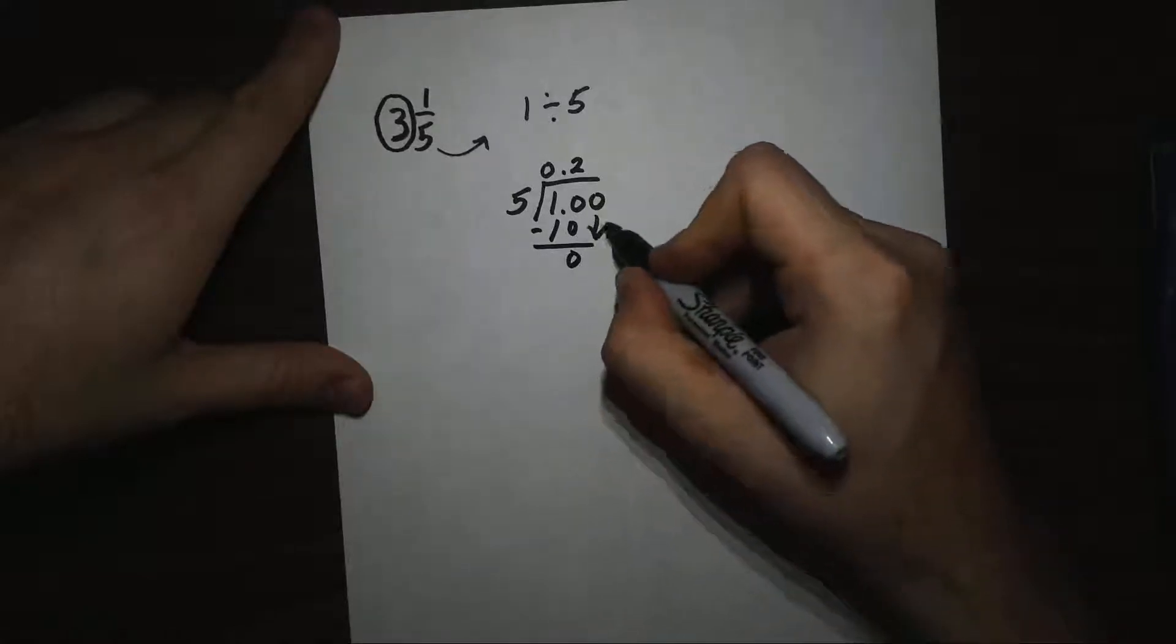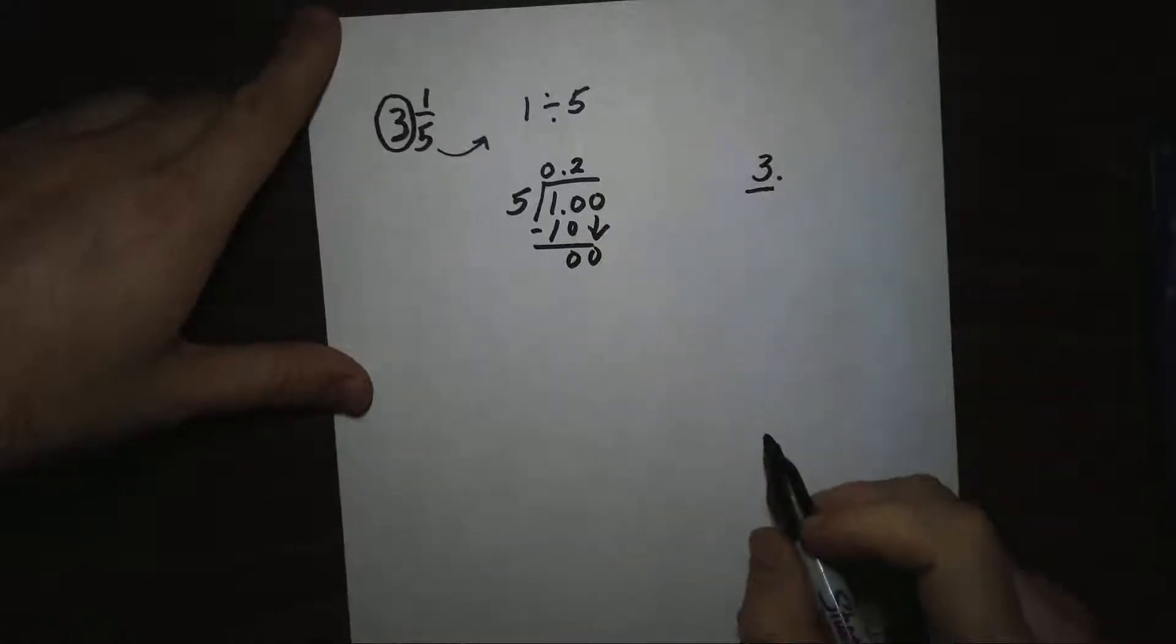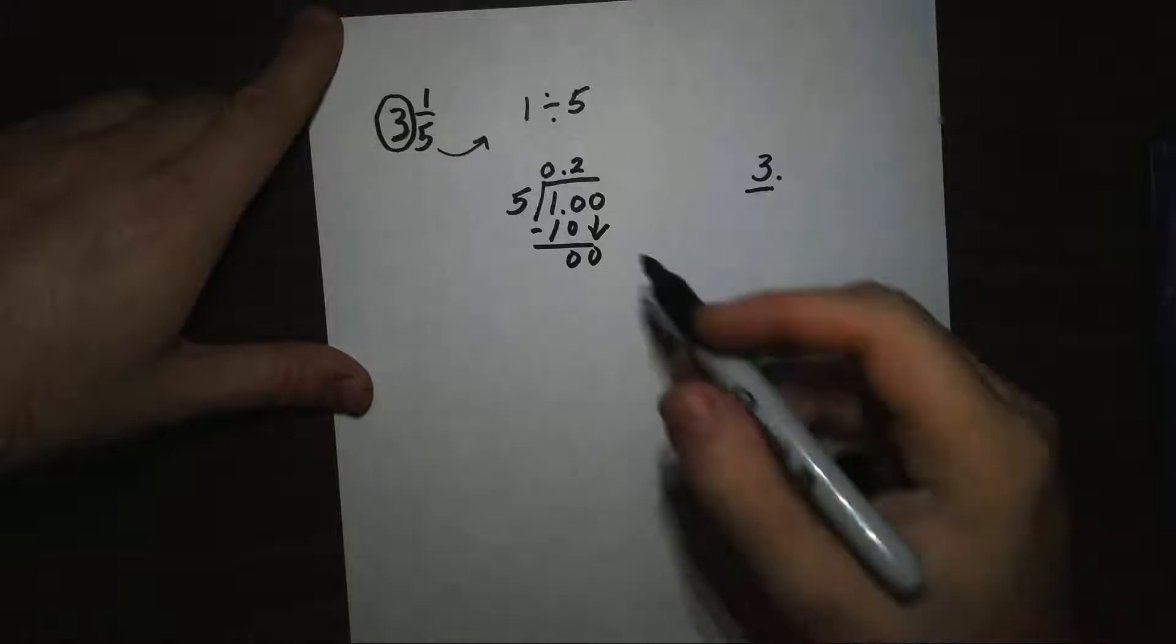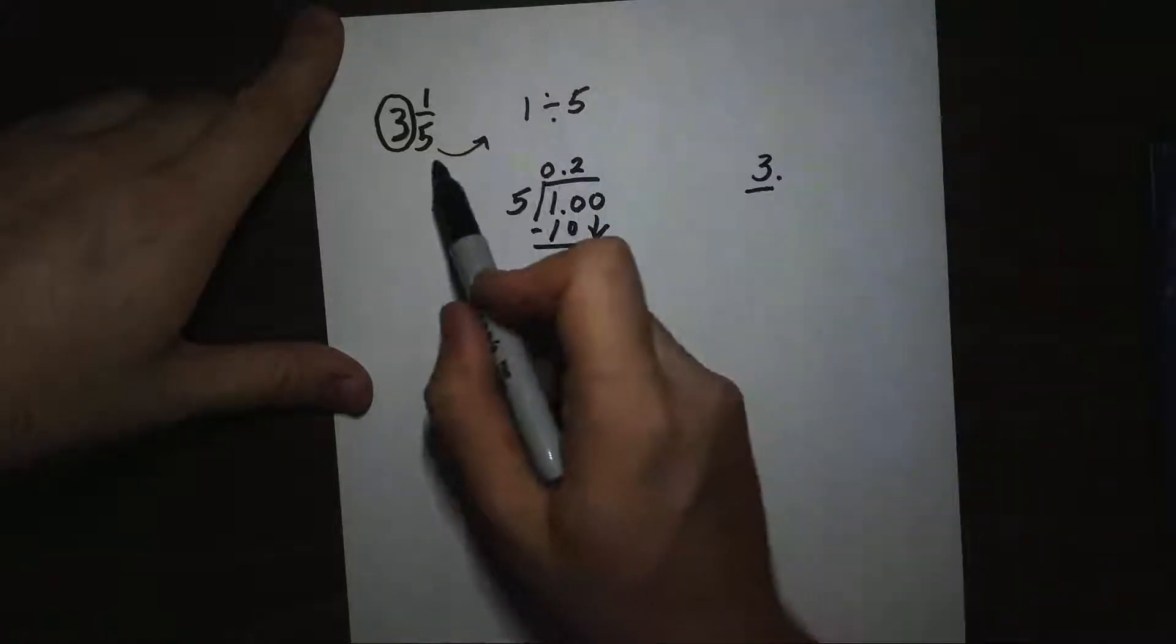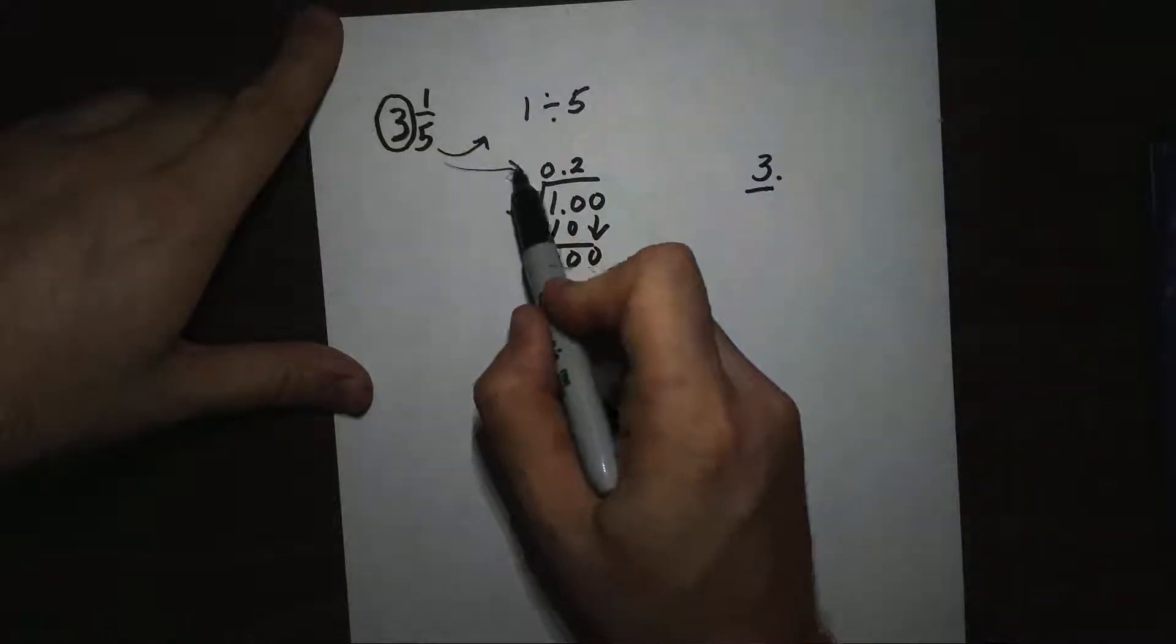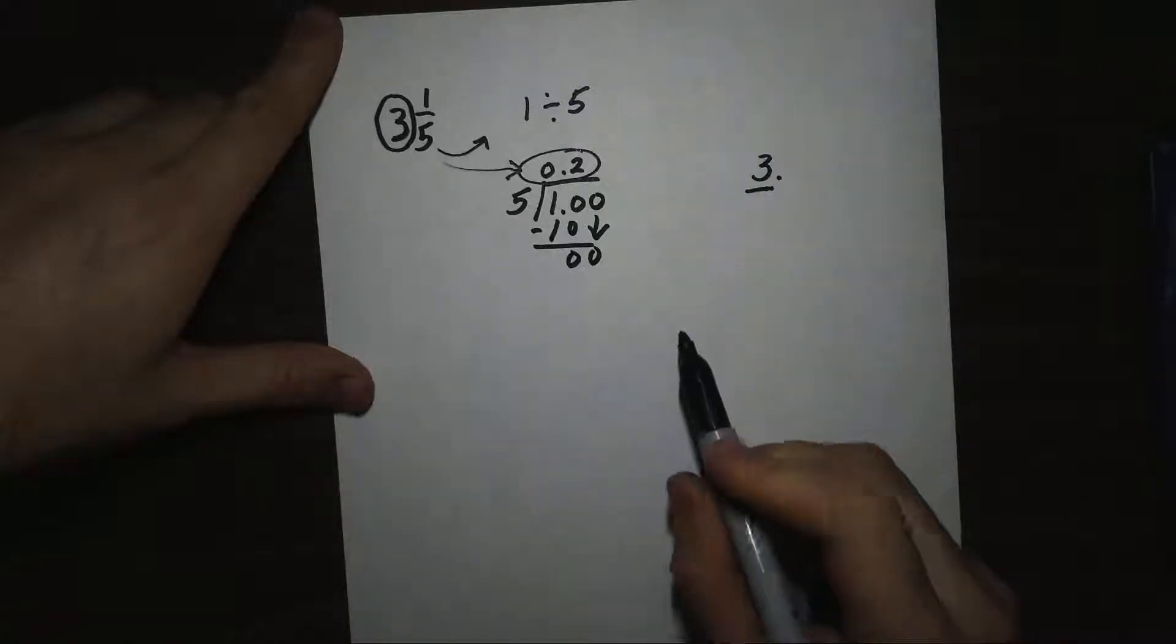We have no remainder, so we could put another 0 up here if we want, but we don't have to. So 1/5 right here as a decimal is equal to 0.2.